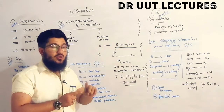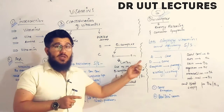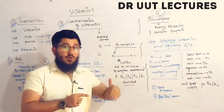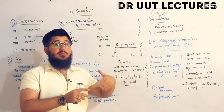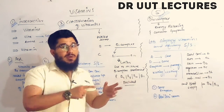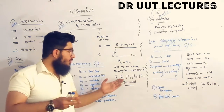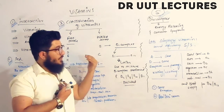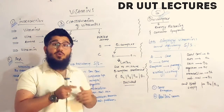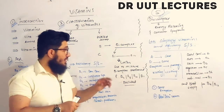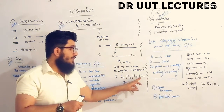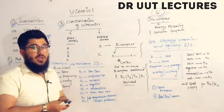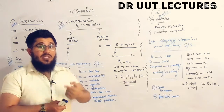Vitamin B includes B1, B2, B3, B4, B5, B6, B7, B8, B9, B10, B11, and B12. You might wonder why B4, B8, B10, and B11 are not studied in textbooks. The reason is that when these vitamins were being discovered, those numbered vitamins were found to match the properties or structures of already available vitamins, so they were excluded from the series.